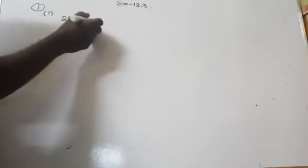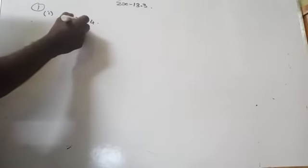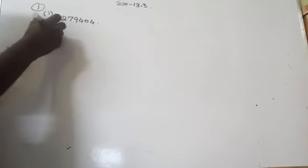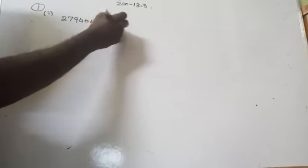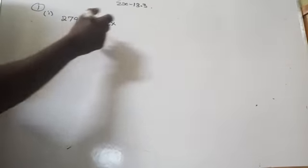Write the following number in the expanded form: 279404. How will you write down this one? The digits represent ones, tens, hundreds, thousands, ten thousands, and lakhs. Express this as 2 into — after 2, how many digits are there? Five digits.